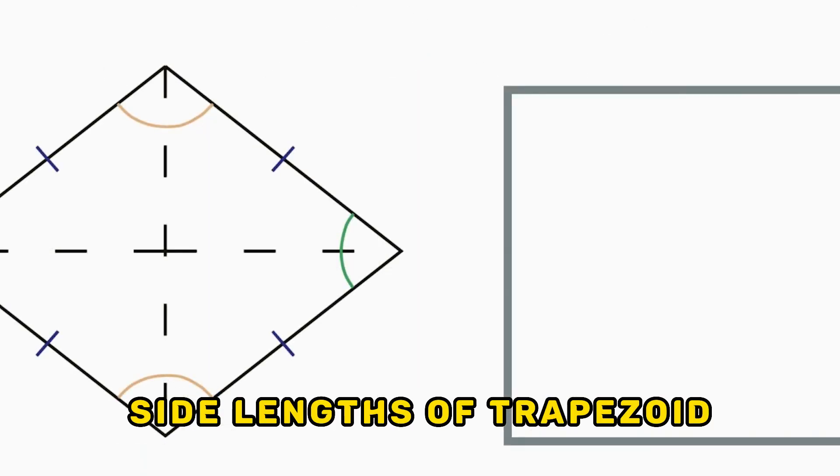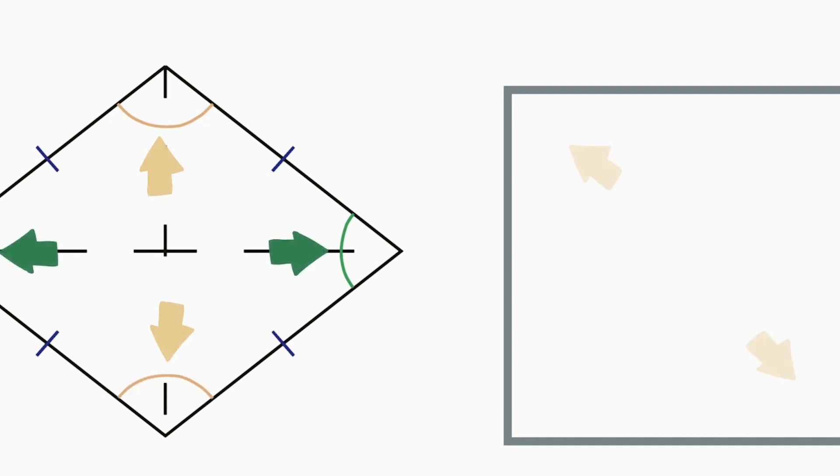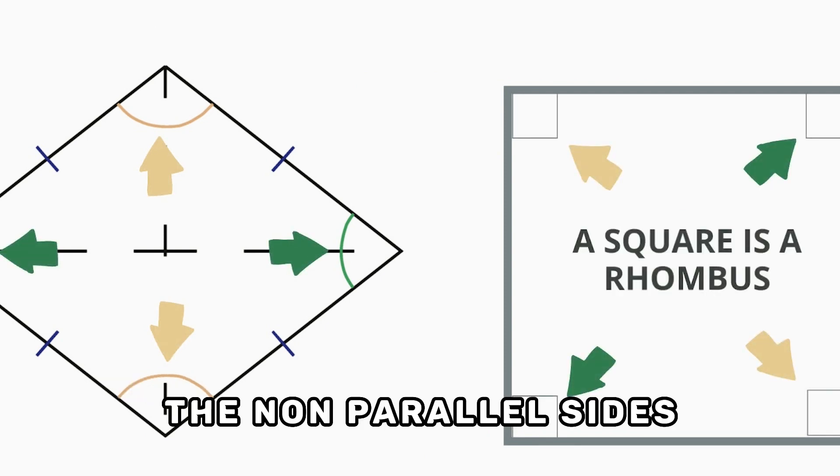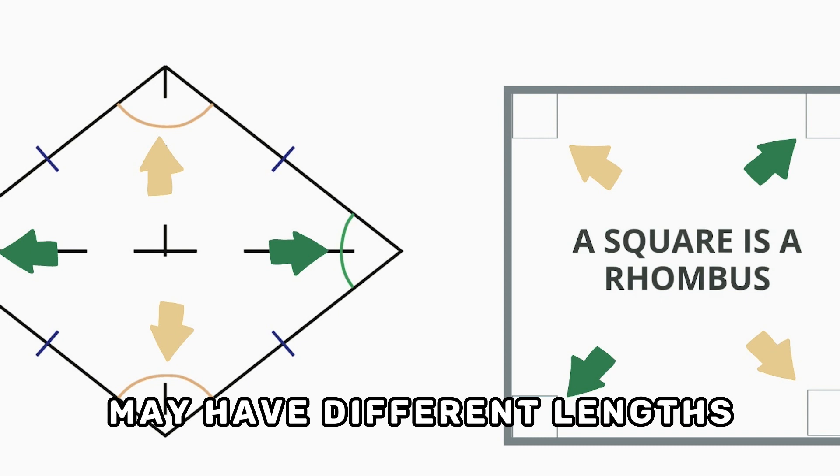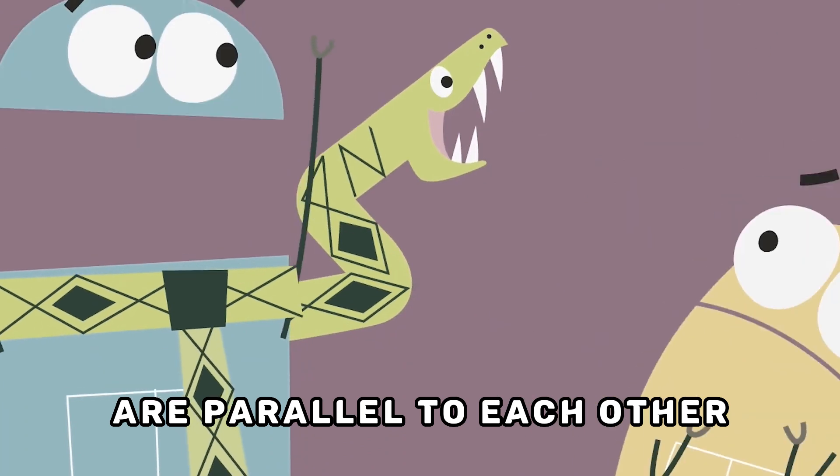Side lengths of trapezoid: In a trapezoid, the lengths of the sides can vary. The non-parallel sides, known as the legs, may have different lengths, while the parallel sides, called the bases, are parallel to each other.